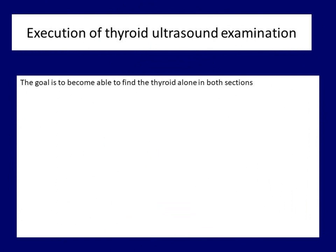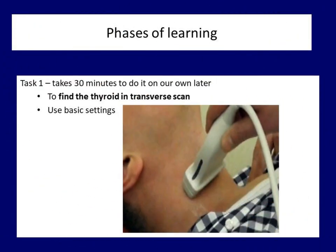Now we move on to the second part of the lecture. Naturally, if you have a mentor who sacrifices 30 to 60 minutes to teach you the basics, you are in a good situation. However, even in this case, it's worth listening to this lecture so you know what to look out for. There are three steps to follow. The first is to find the thyroid in transverse scan, meaning the ultrasound probe is perpendicular to the patient's neck. You may require half an hour to practice how to find the thyroid in transverse scan.